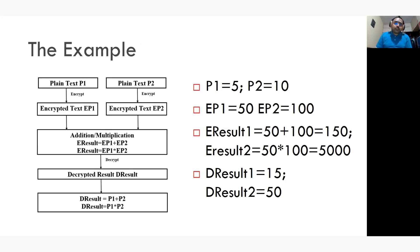Now this example shows how homomorphic encryption works. We have here two plaintexts, P1 and P2, that is 5 and 10. The corresponding encrypted values are 50 and 100. We are performing addition and multiplication operations on the encrypted data. So we are not adding 5 and 10, instead we are performing operations on 50 and 100. The corresponding results are shown here. When we decrypt 150, you get 15. When you decrypt 5000, you get 50. This is equivalent to the operations performed on plaintext.